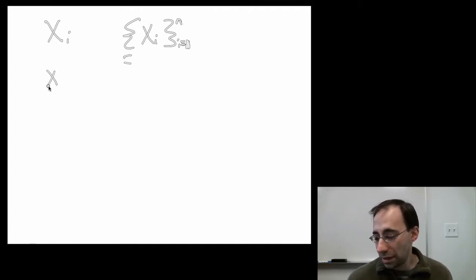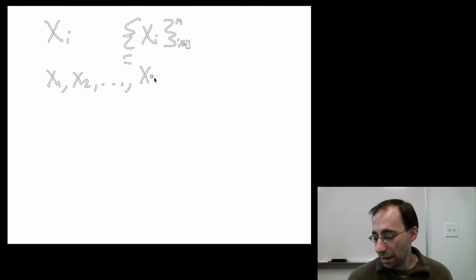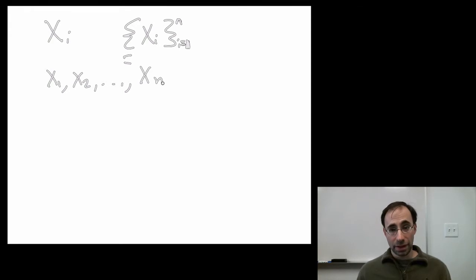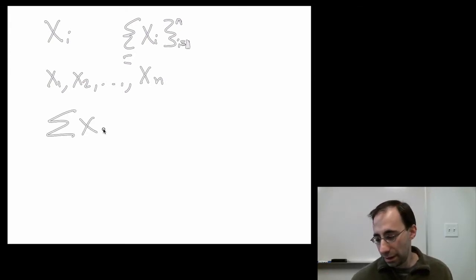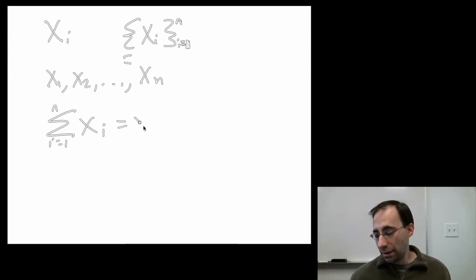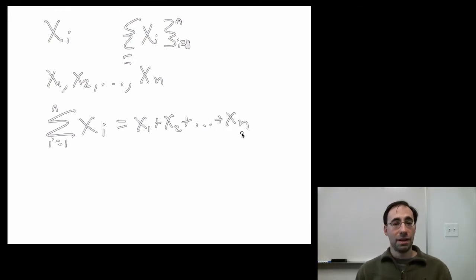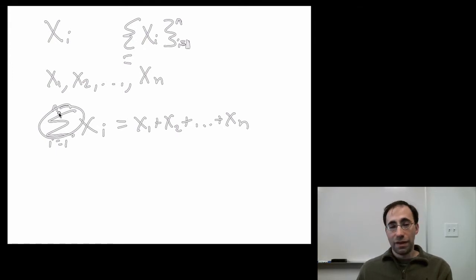So this notation is the same as writing x1, x2, dot dot dot — ellipses meaning stuff I'm leaving out — to xn. That's another way of writing that sequence. Again, a sequence is just a list of objects of some type. A series is a sum of the elements in a sequence: x1 plus x2 plus dot dot dot plus xn. When we defined the summation operator, we effectively defined a series — a series is just the sum of elements in a sequence.